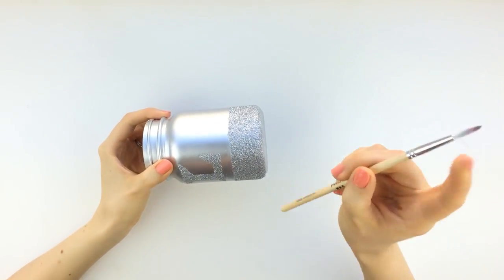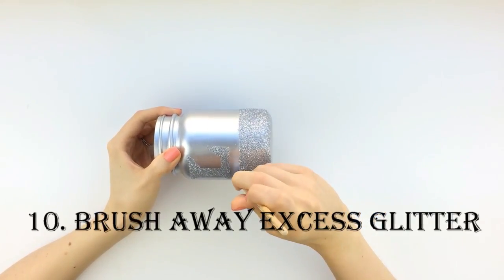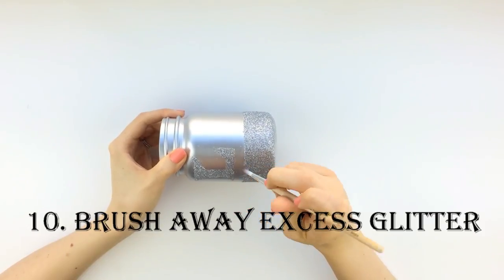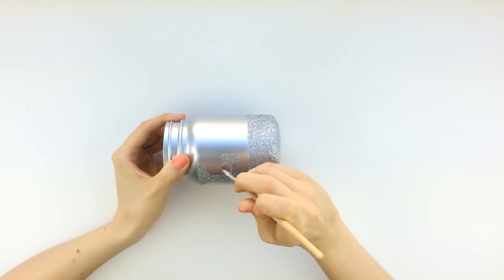Once you've allowed the mod podge or glue to dry for about 20 minutes, you may want to go back over with a paintbrush to clean up the lines and excess glitter.